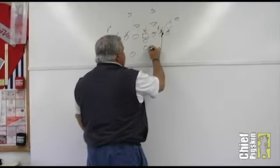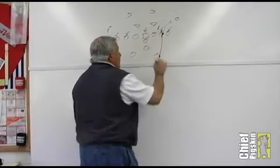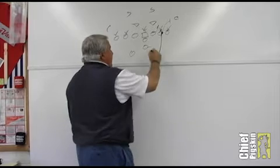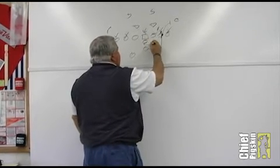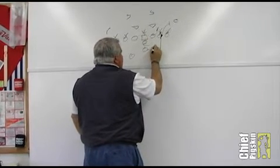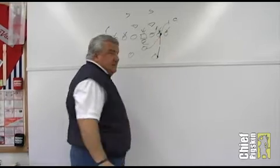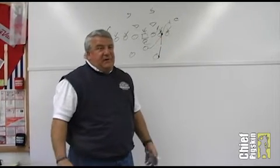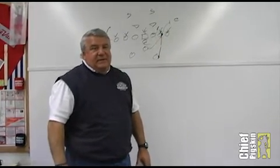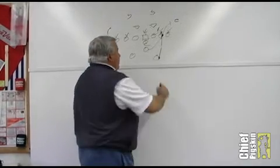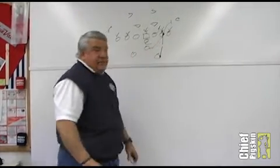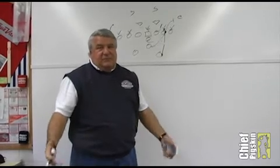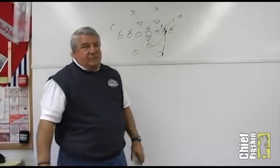Our fullback takes what we call just a jump step towards the hole to the right just to give him a better angle. Quarterback reverses out. He runs straight at that outside cheek of that tackle. Very, very important. He takes that correct angle. If he's taking this belly in angle, it's not going to be a very good play. It's going to be too late in getting there.